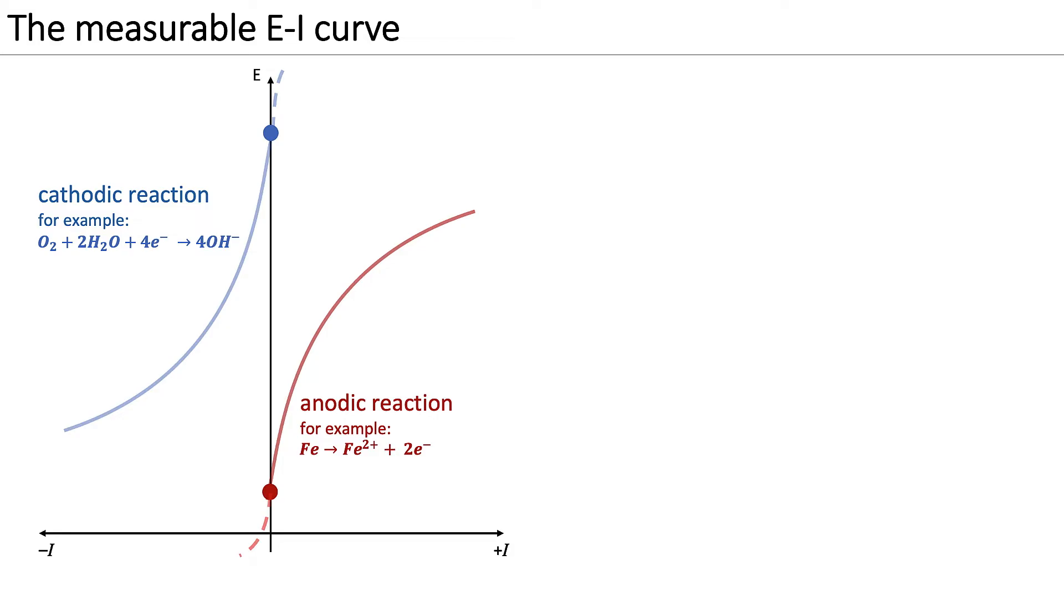The potential current relationships of these two half-cell reactions cannot be directly measured. We can measure the net current, however, here shown as a black curve, with the help of a three-electrode setup.